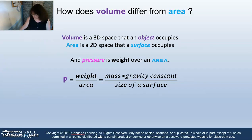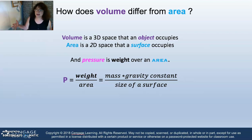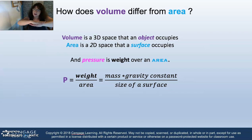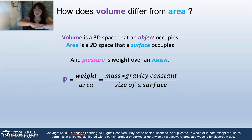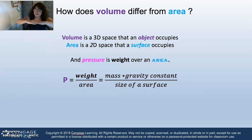When we review volume versus area: volume is the container, the 3D space that an object occupies. An object can be a gas, a liquid, or a solid — the 3D space is volume. But area is a 2D space of length times width that a surface occupies, like ground. So there's the difference between density as a volume calculation and pressure as an area calculation. Both density and pressure use mass in the numerator; the denominator differs by volume or area.